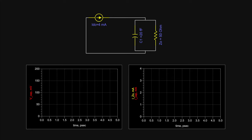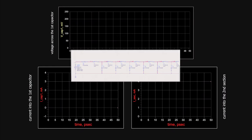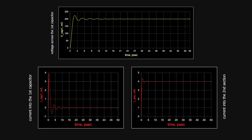The voltage across the capacitor increases exponentially to 0.2 volts with time constant RC, while the current drawn by the capacitor decays exponentially to zero at the same rate. Since the sum of the two currents is constant, the current entering the resistance increases exponentially until reaching the constant current source value. Using the simulator, we can get the voltage waveform across the first capacitor and the current injected into the adjacent LC segment — very similar to the approximation we made.